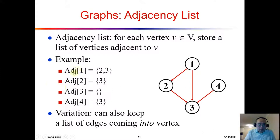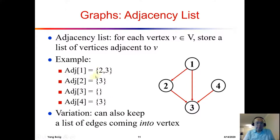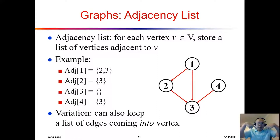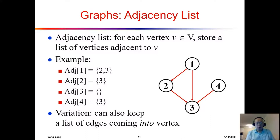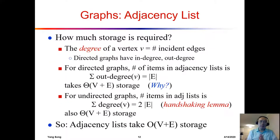In the incoming-edge variation, adjacency list index 1 would be empty because no nodes point to node one. For node two, we'd store node one because one can go to two. For node three, we'd store two, one, and four because from nodes two, one, and four we have incoming edges to node three. This variation is possible but not commonly used.